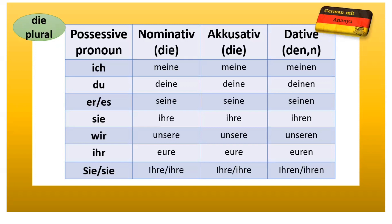The last one is 'die' plural. For plural, nominative and accusative are the same. So: meine, deine, seine, ihre, unsere, eure, ihre, ihre — same for accusative. And for dative it is always 'den' plus '-en'. Whatever the noun will be, we add '-en': meinen, deinen, seinen, ihren, unseren, euren, ihren, ihren.